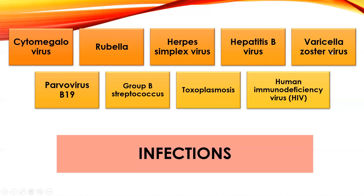Varicella, chicken pox virus, does pass through the placenta. Parvovirus, the human variety, also passes through the placenta. Toxoplasmosis is typically gotten through eating infected vegetables or cat litter. For HIV, if the mom is infected she starts antiviral medication at 14 weeks and continues through pregnancy, with IV administration during birth. Then the baby will have oral antiviral syrup once born.